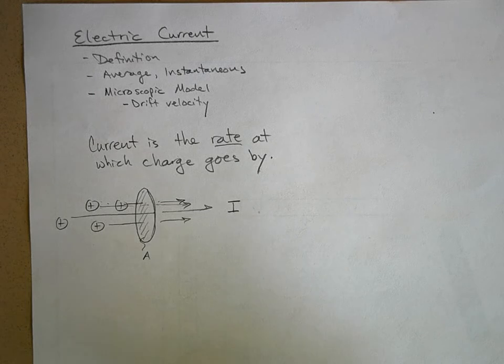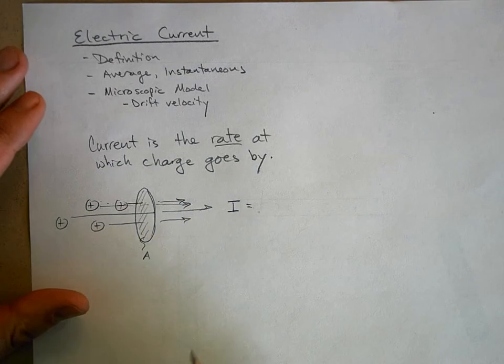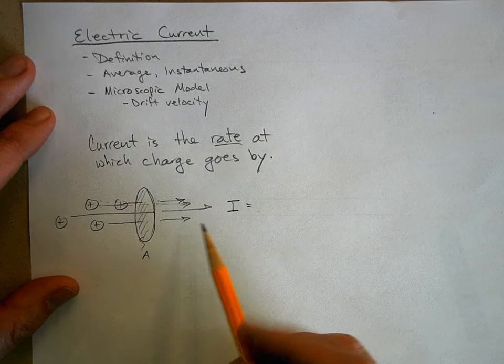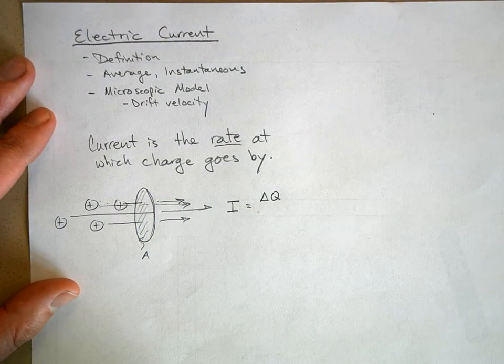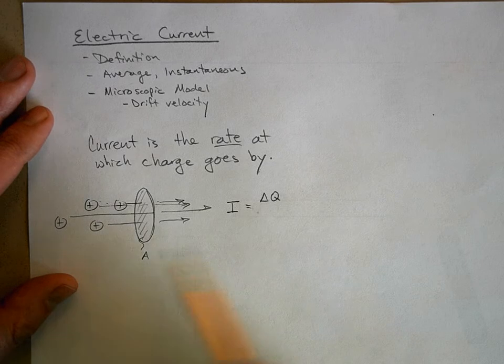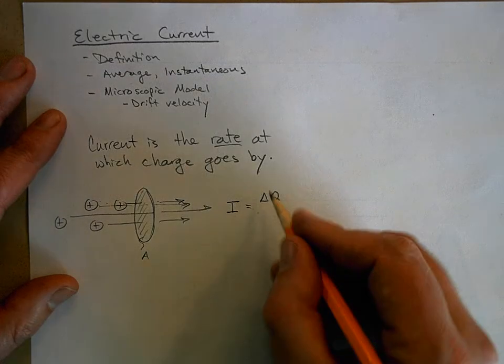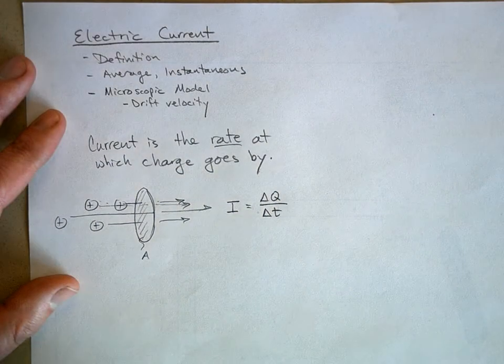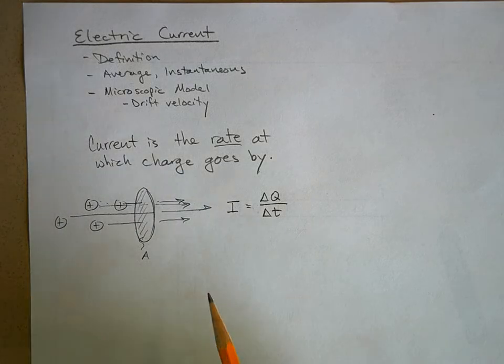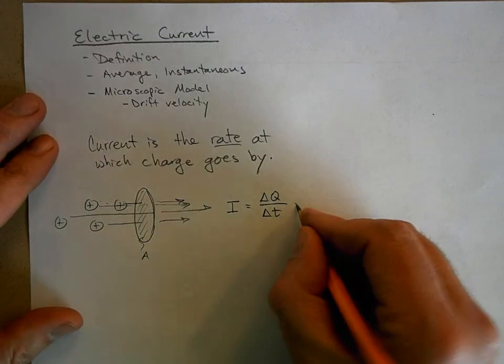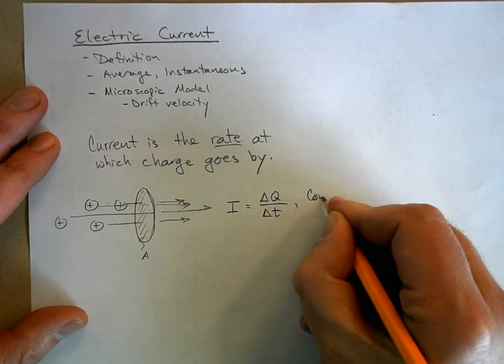Over a period of time, we measure how much charge goes by. We'll call that delta Q. Delta Q is the quantity of charge that flowed through there in some quantity of time, divided by some quantity of time. So this is average current.